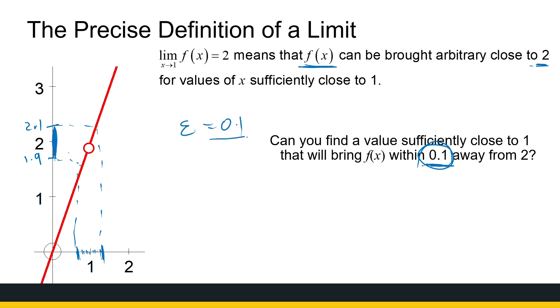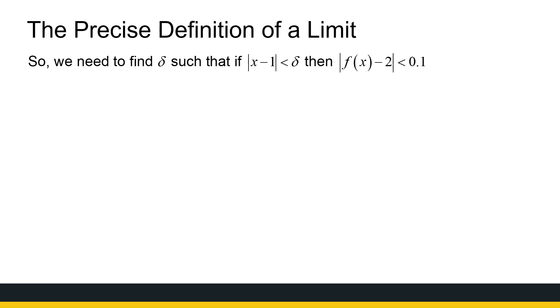If we choose our epsilon, we want to say, can we find that delta value? Let's formalize it more in terms of this definition. We need to find a delta such that if x minus 1 is less than delta - the distance from my x coordinate to 1, if that distance is less than delta, then my distance from my y coordinate to 2 is going to be less than 0.1.